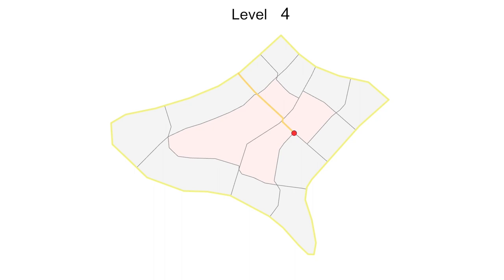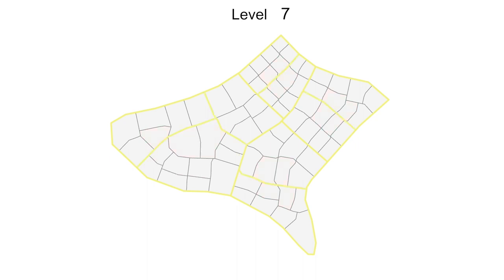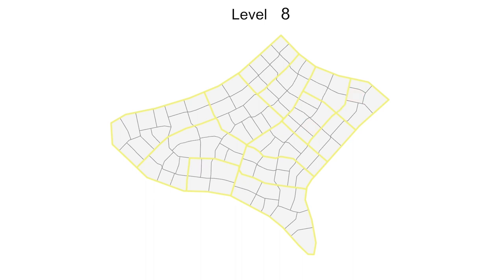We further connect the street end to the existing street network to avoid creating a cul-de-sac. We hierarchically co-generate parcels and streets at each level while ensuring that each parcel is reachable by the street network, until any further parcel partitioning violates the minimally allowed parcel size constraint.